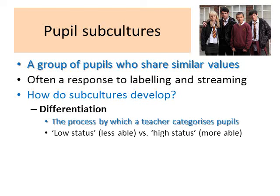Firstly, we need to think about the process of differentiation — the process by which a teacher categorises pupils, measuring students against the idea of an ideal pupil and thinking about whether the student is able or not. If they are deemed able, they will be considered high status; if not, they may be considered low status.